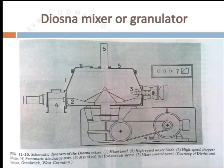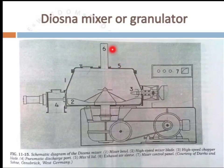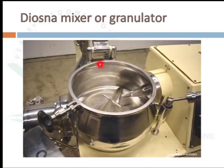This is the structure of the Diosna mixer or Diosna granulator. A photo of the Diosna mixer shows the mixer and chopper. The Littleford MGT mixture is similar to the Diosna mixer. The Graal mixer has a mixing arm, a chopper blade, a bowl, and a bowl cover, with a hydraulic discharge tube.